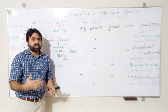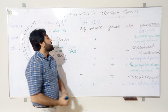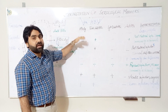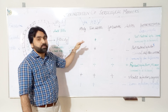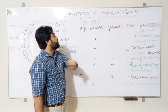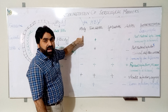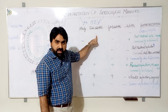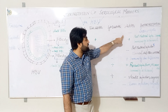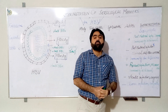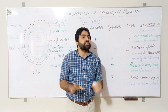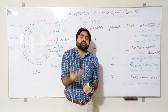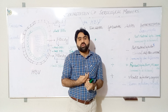Now we interpret the presence or absence of different serological markers using a table. If a person is negative for HBsAg, negative for total anti-HBc, and negative for anti-HBs, this means the patient is susceptible — they have never been exposed to hepatitis B virus and are at risk of contracting infection after contact.